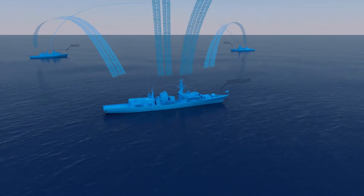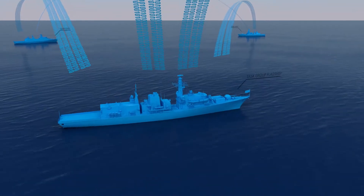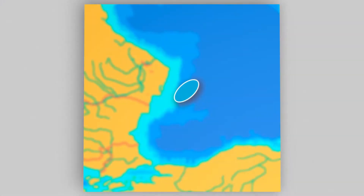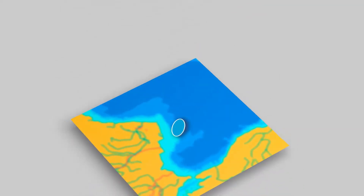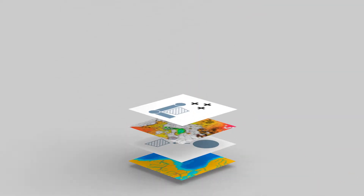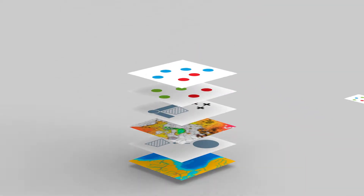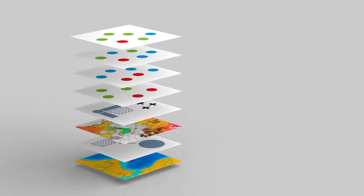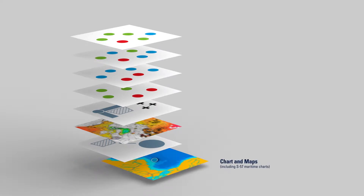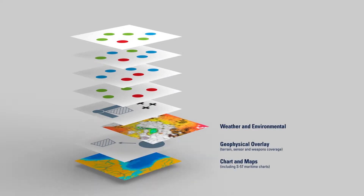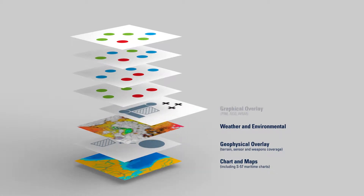Successful naval operations rely greatly on complete situational awareness. SIDAWARE Maritime Command and Control can provide naval commanders with a true common operational picture in one single view. Each layer gives the operator the needed situational awareness to act according to the situation, from geophysical overlays, weather and environment graphs, and unit movements.